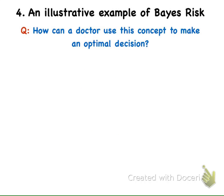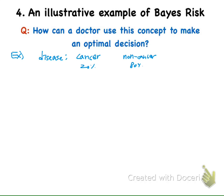Now let us have a look at an illustrative example of Bayes' risk. Our question is: how can a doctor use this kind of concept to make an optimal decision? For example, as we used before, the cancer patient is 20% of the total population, and the non-cancer disease patient is 80% of the total population.